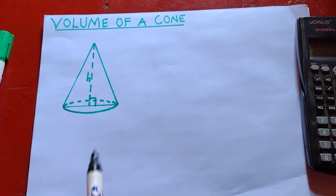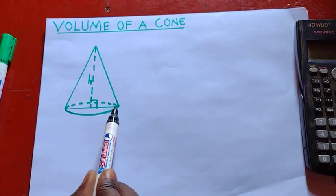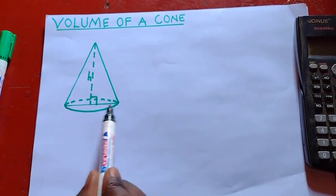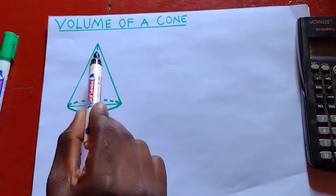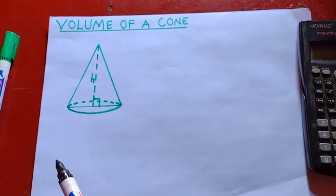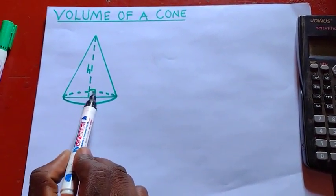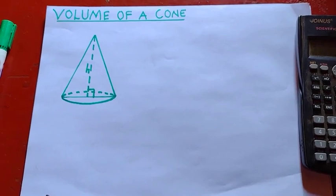Alright, so this cone, you can see that it has got the circular base down here. Okay, then from here to here, we are having the perpendicular height. This perpendicular height is giving us a right angle here, which is a 90 degrees angle.